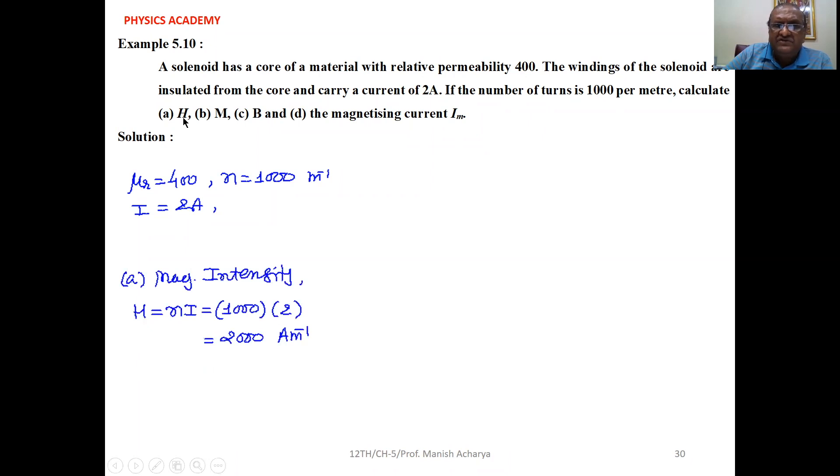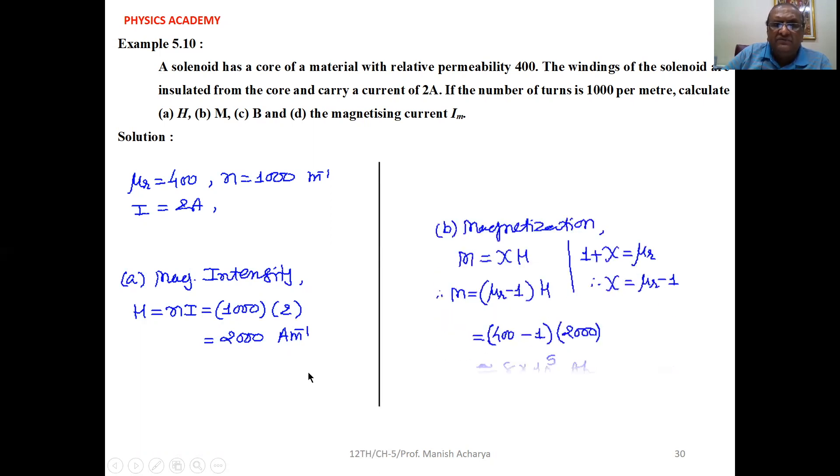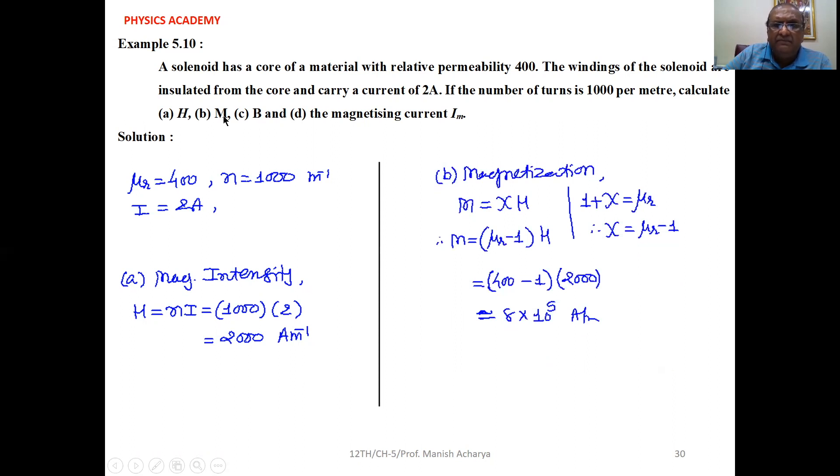So first, H, that is magnetic intensity, is equal to N into I. N is 1000, I is 2, so H equals 2000 ampere per meter. Then M, that is the magnetization...